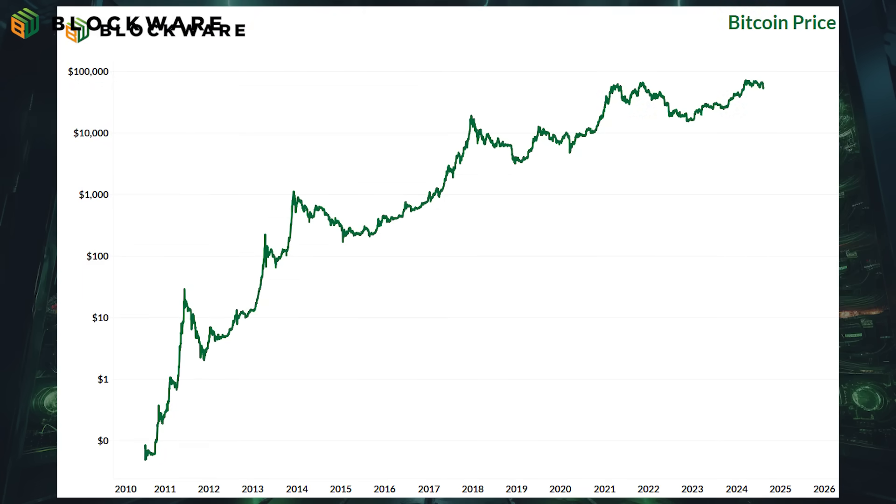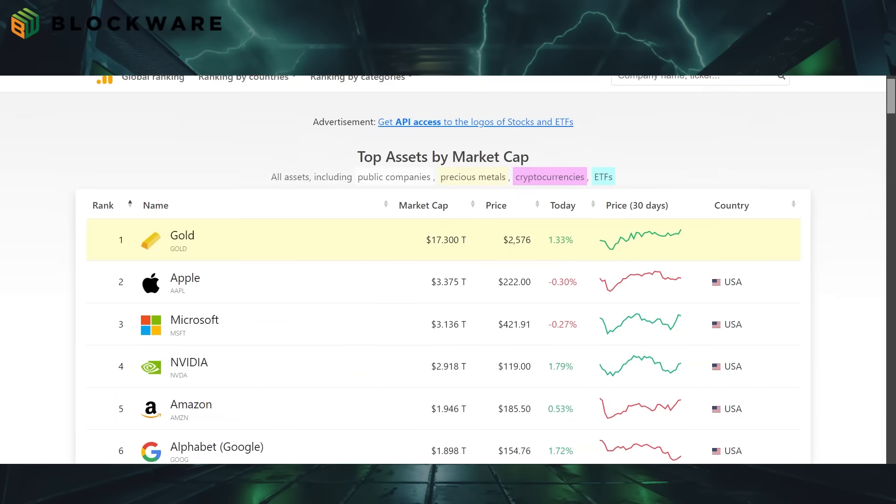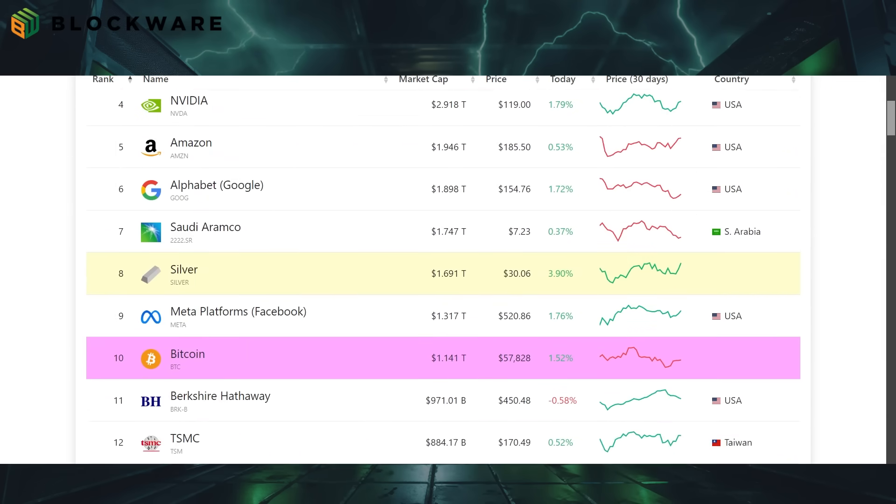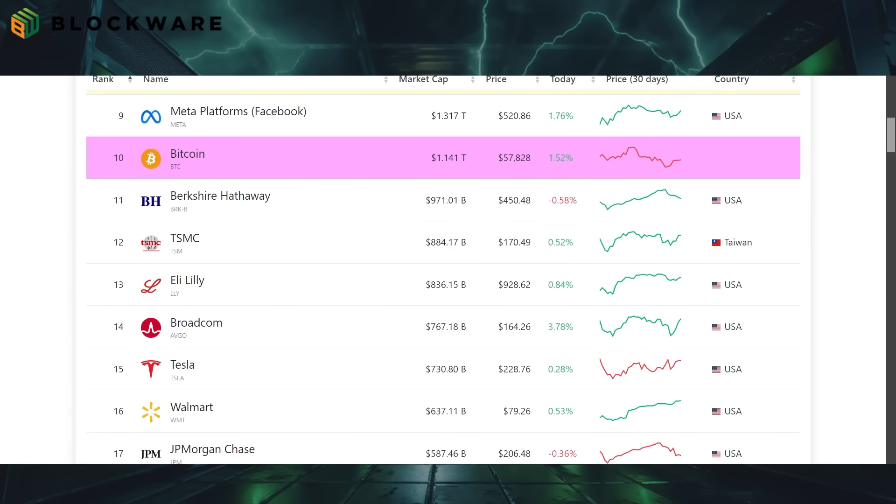Here's a chart showing the Bitcoin price in terms of dollars since its inception. At the time of this video, Bitcoin is the 10th largest asset by market cap in the entire world, with a market cap of roughly $1.1 trillion. This is more valuable than Berkshire Hathaway, Tesla, JPMorgan Chase, Walmart, Visa, and many other assets.